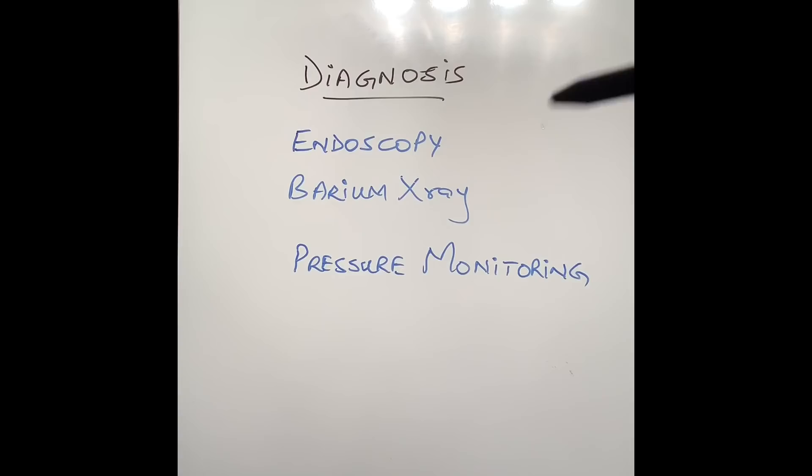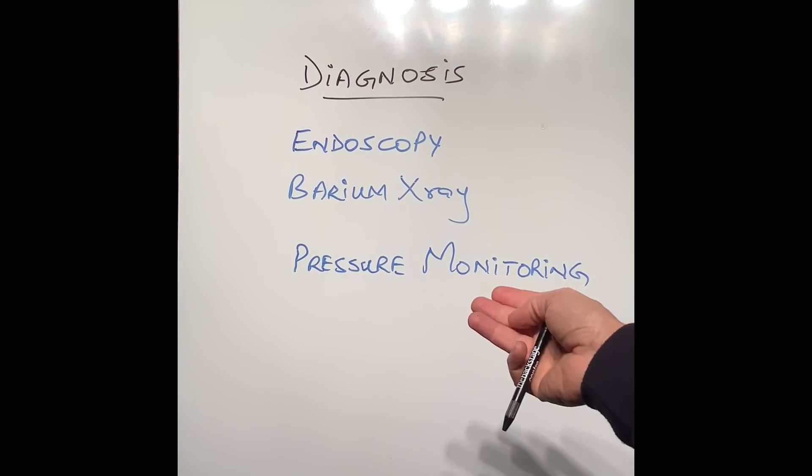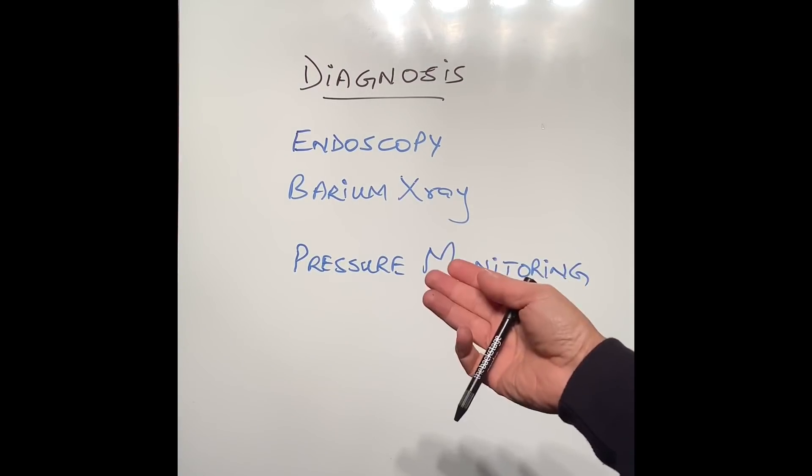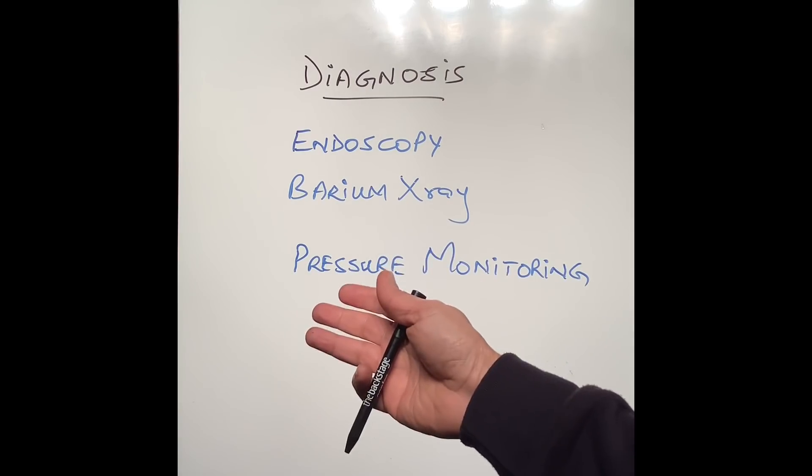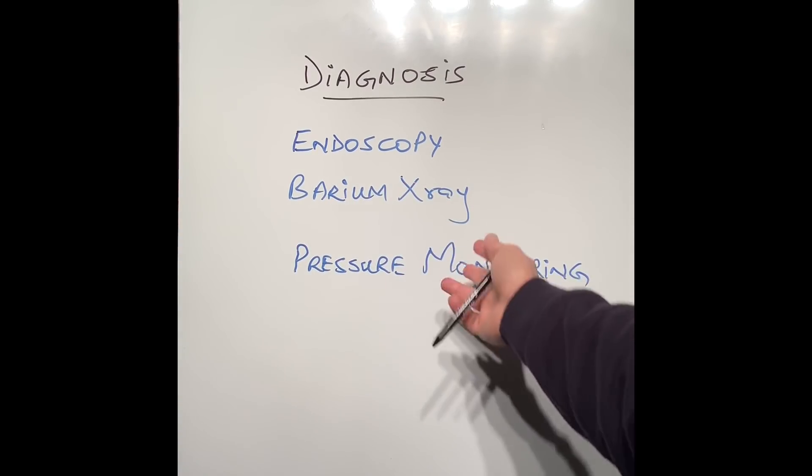The most important investigation in confirming this diagnosis is pressure monitoring or manometry. What happens in this test is the doctors put a probe down the nose into the patient's lower part of the gullet, and they ask them to swallow different things to see whether the esophagus is working too little or too much or not at all, depending on whether it's a very baggy esophagus or a very hyperactive esophagus or achalasia.